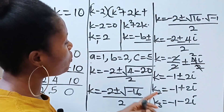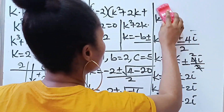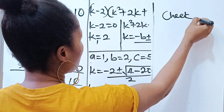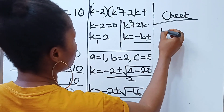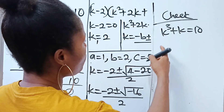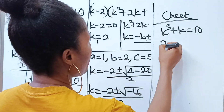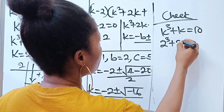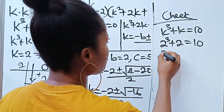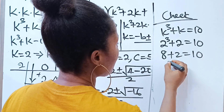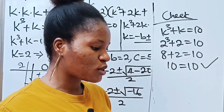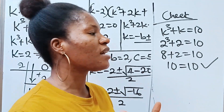These are the three values of k. Let's check using the real value k equals 2: k to the power of 3 plus k equals 10. Substituting: 2 to the power of 3 plus 2 equals 8 plus 2 equals 10. So 10 equals 10 — correct. Thank you so much for watching and have a lovely day.